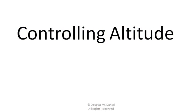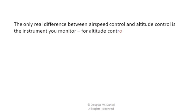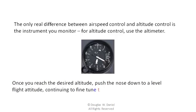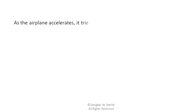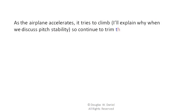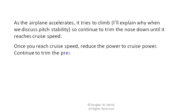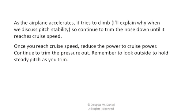The only real difference between airspeed control and altitude control is the instrument you monitor — for altitude control, use the altimeter. Once you reach the desired altitude, push the nose down to a level flight attitude, continuing to fine-tune the pitch attitude. As the airplane accelerates, it tries to climb, which I'll explain when we discuss pitch stability. Continue to trim the nose down until it reaches cruise speed. Once you reach cruise speed, reduce the power to cruise power and continue to trim the pressure out. Remember to look outside to hold steady pitch as you trim.